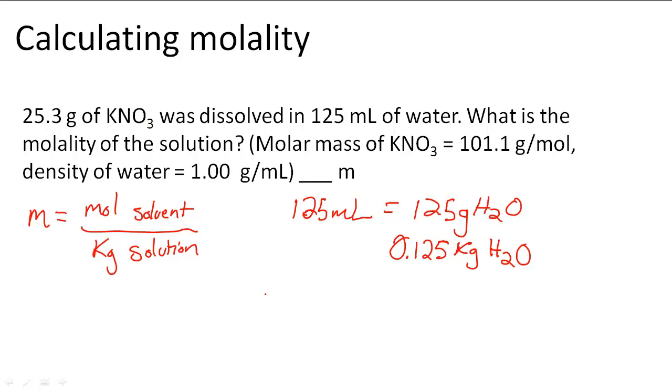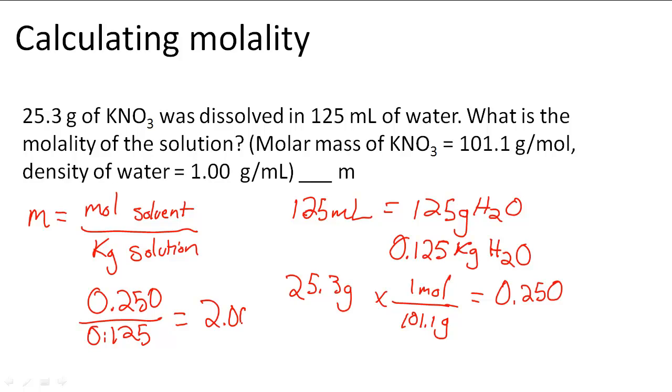Now we have to find the moles of KNO3, which is 25.3 grams times 1 mole divided by 101.1 grams of KNO3. Using the molar mass conversion factor, we get 0.250. Looking for three significant digits, 0.250 divided by 0.125 kilograms gives us the molality as 2.00 m. So 2.00 molal is the answer to this question.